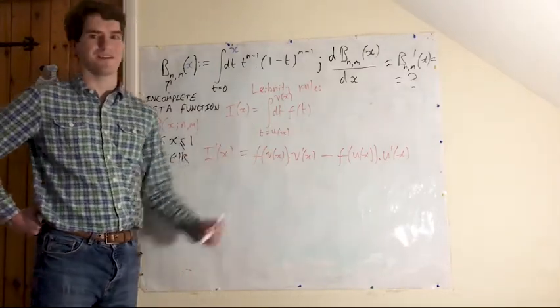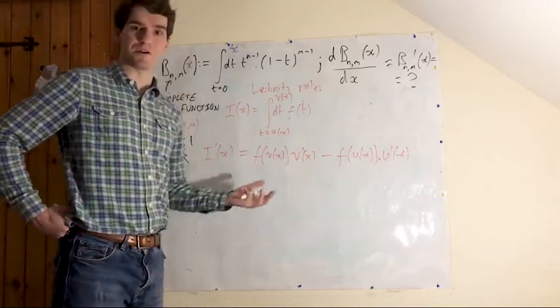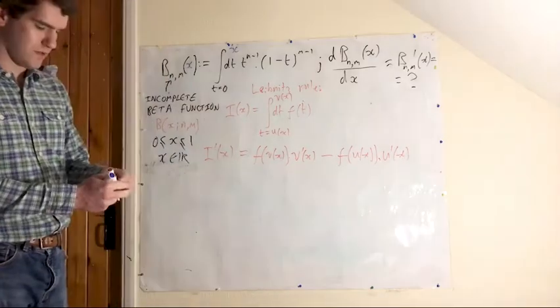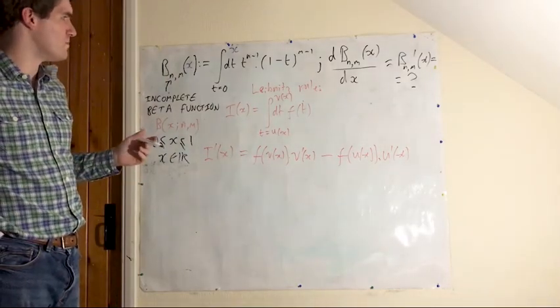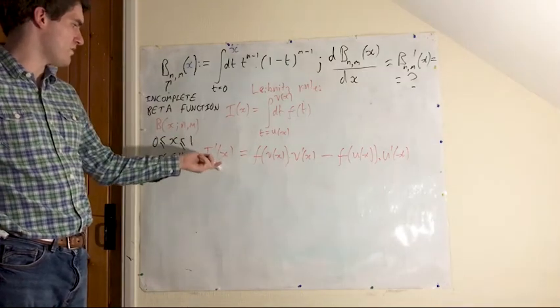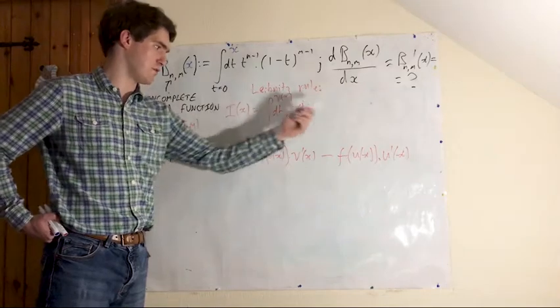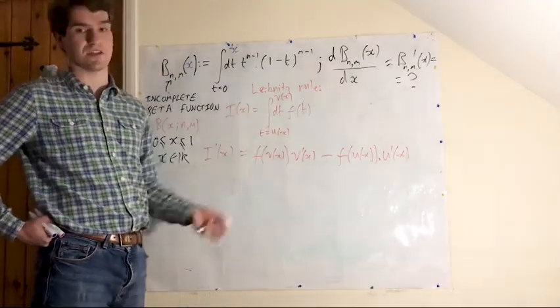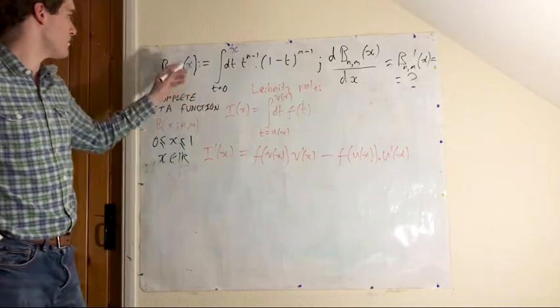Okay, now we're ready to finally apply this to our incomplete beta function. So, what do we need to do? Well, in order to find this derivative, we need to define our v of x, our u of x, and what f of t is.